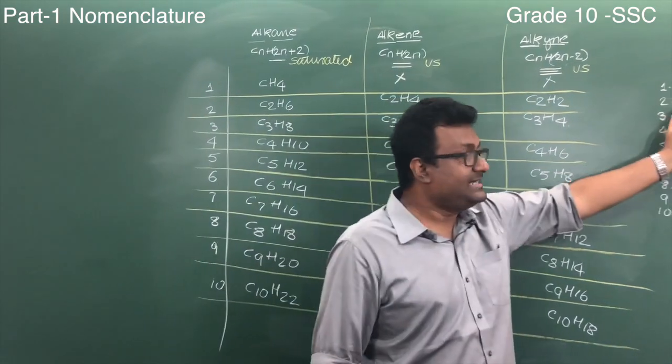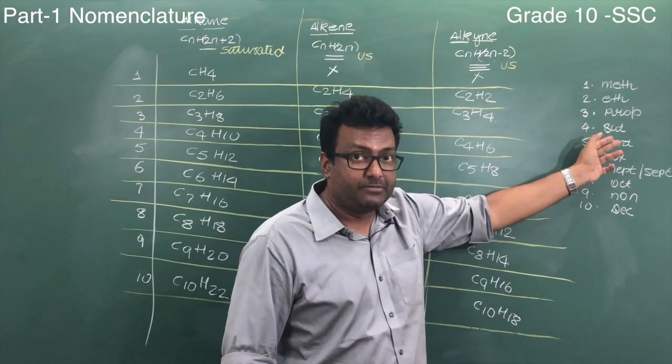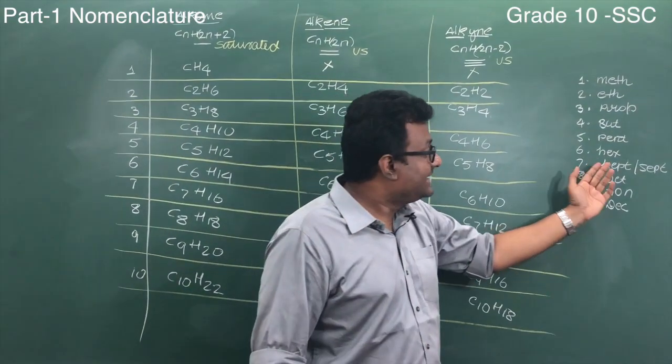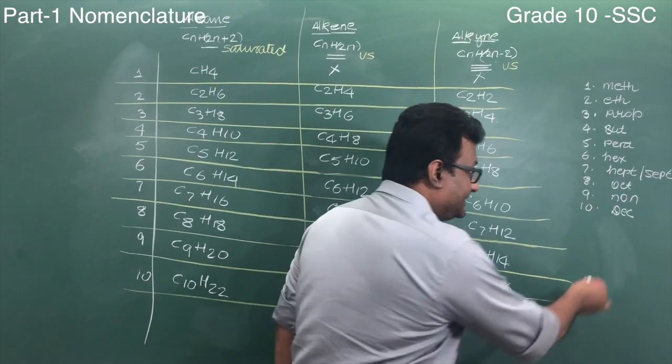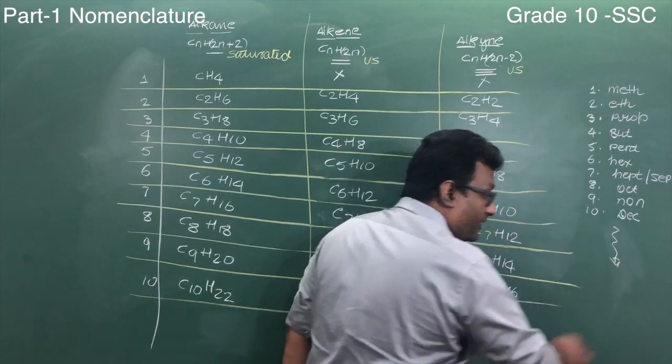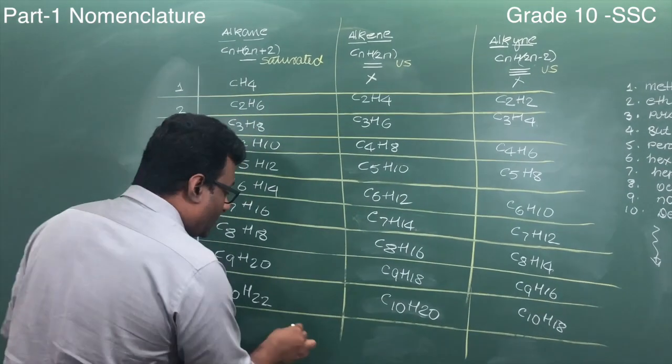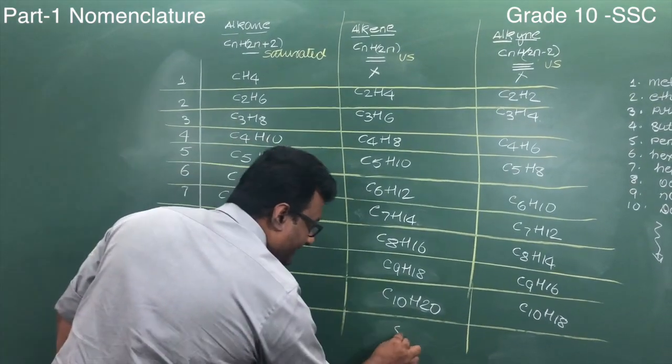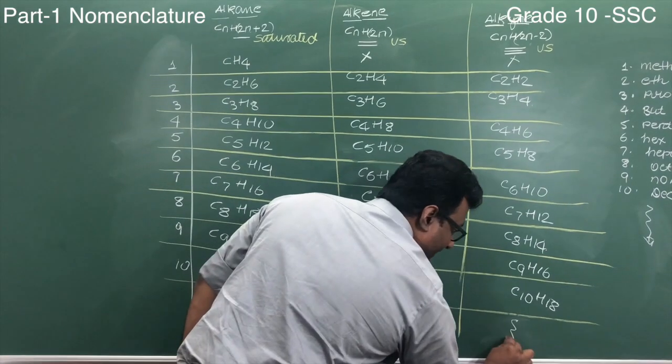Now, if the carbon atom is 1, it's called meth. If it is 2, it is called eth. If it is 3, prop. And but, and pent, and hex. And 7 is hept, and oct, and non, and dec. And this goes up till infinity because carbon shows the property of catenation.